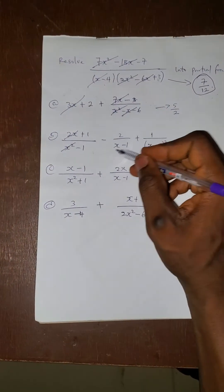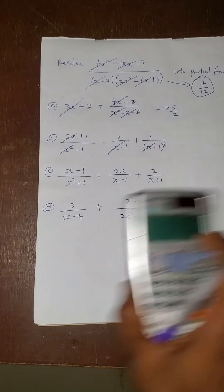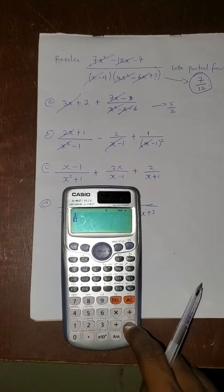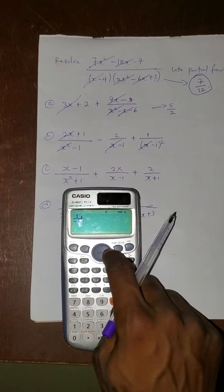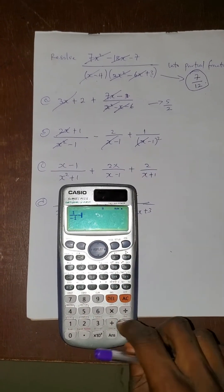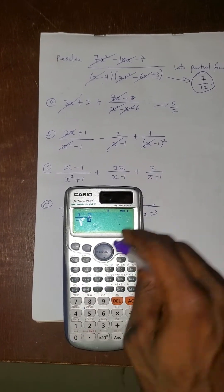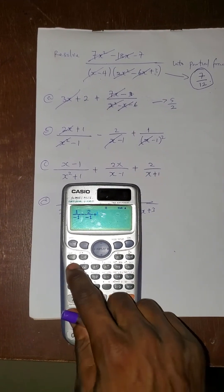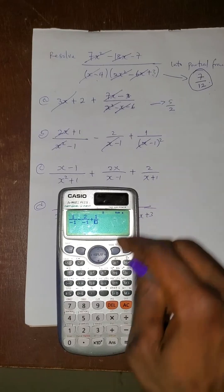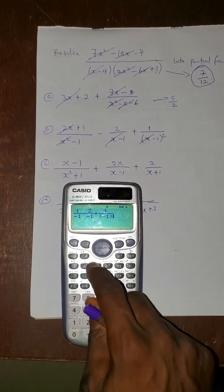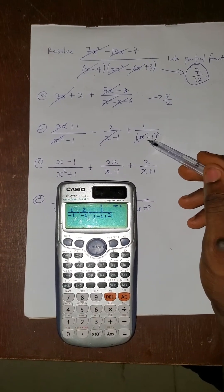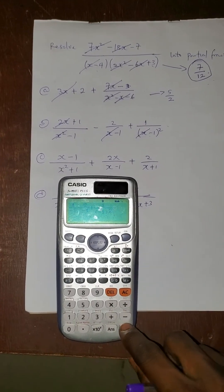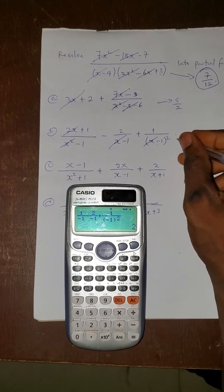Cancel this, cancel this, cancel this, cancel this. What remains here is 1 over minus 1, then minus 2 over minus 1, then plus 1 over — this one is in bracket — minus 1, all squared, because the minus 1 is inside the bracket. Press equals. What you have here is 2.